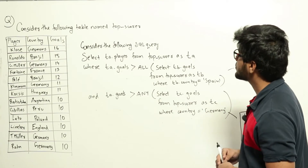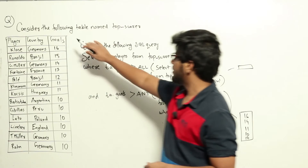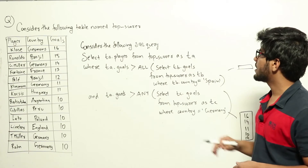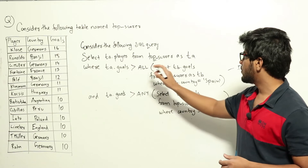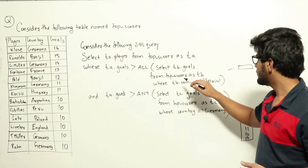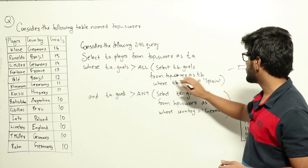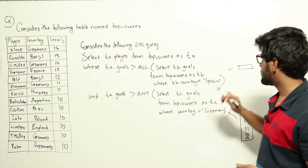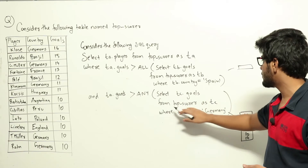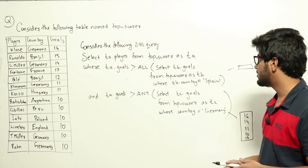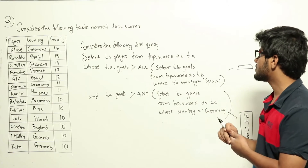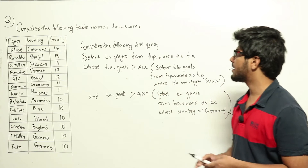Consider the following table named 'topscorer'. We have been given this table having three columns: player, country, and goals. Consider the following SQL query: SELECT ta.player FROM topscorer AS ta WHERE ta.goals > ALL (SELECT tb.goals FROM topscorer AS tb WHERE tb.country = 'Spain') AND ta.goals > ANY (SELECT tc.goals FROM topscorer AS tc WHERE country = 'Germany'). This is a question about SQL — we just need to know the concept of ALL and ANY to answer it.